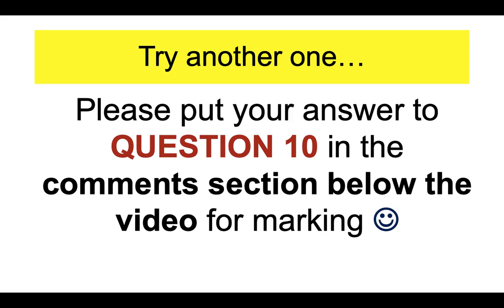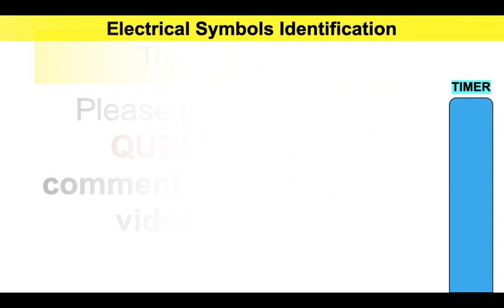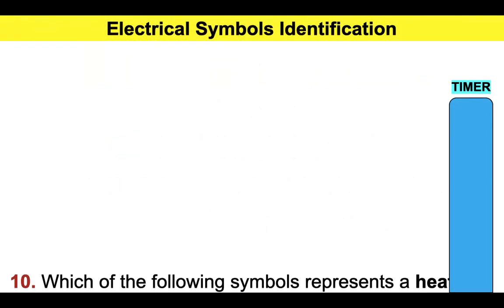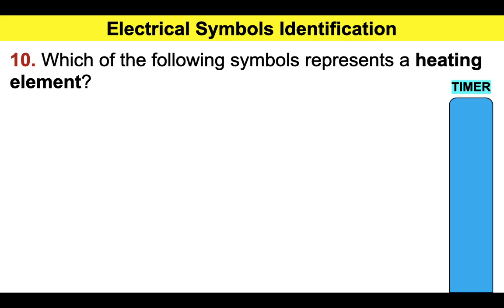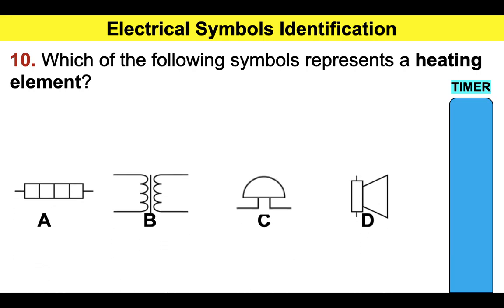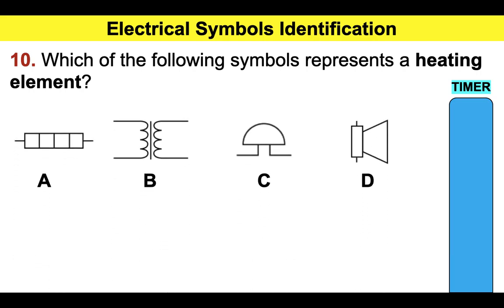Please put your answer to question ten in the comments section below the video for marking. Which of the following symbols represents a heating element? Use a process of elimination to decide which one it is — A, B, C, or D. I bet you can automatically get rid of two of them straight away.